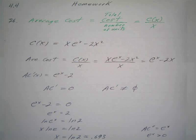Suppose our cost for production is x times e^x minus 2x² where x is measured in thousands of units. Is there a production level that minimizes the average cost—not the overall cost but the average cost? This is my cost for x number of units.